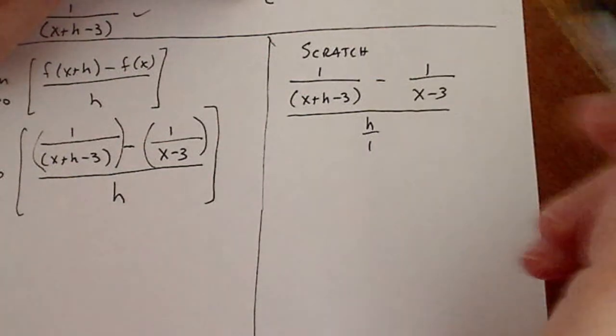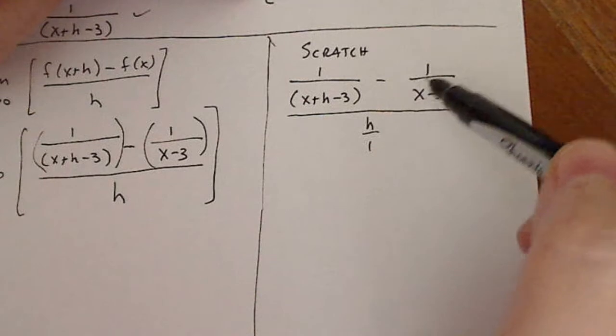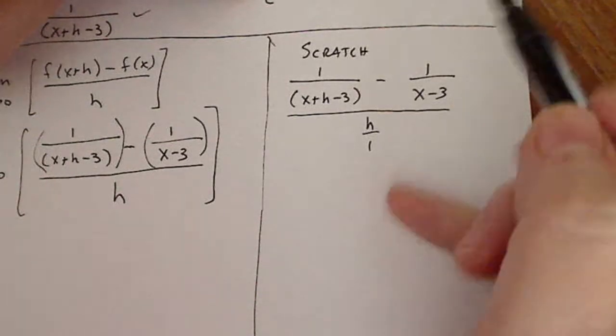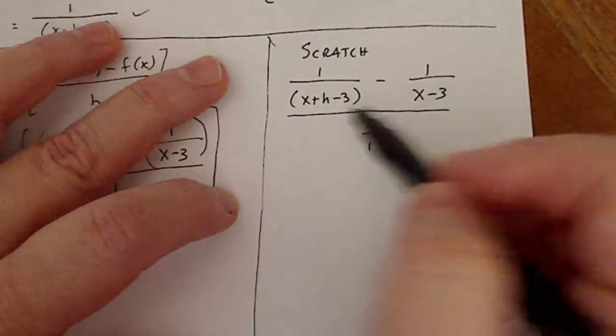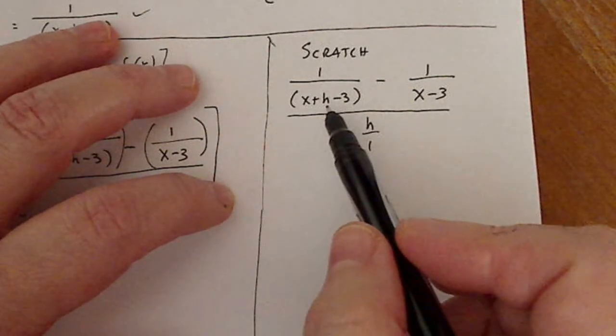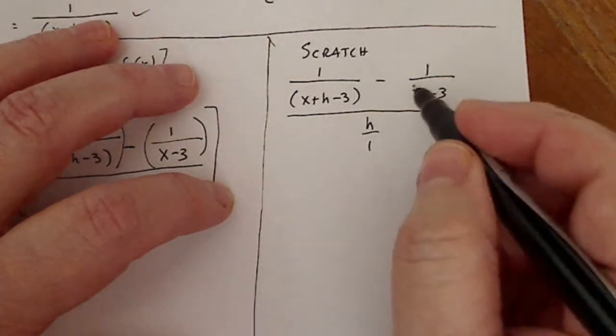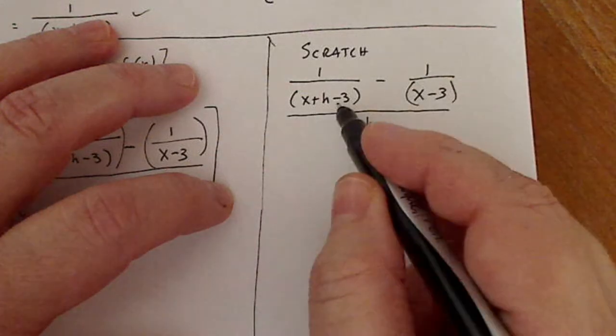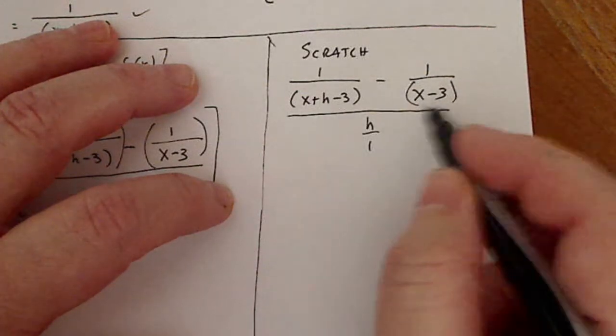Now before I can take the reciprocal, the denominator and multiply, I'm going to rewrite the numerator as one fraction. Now between these two denominators, the common denominator is just the product of those two, x plus h minus three times x minus three.